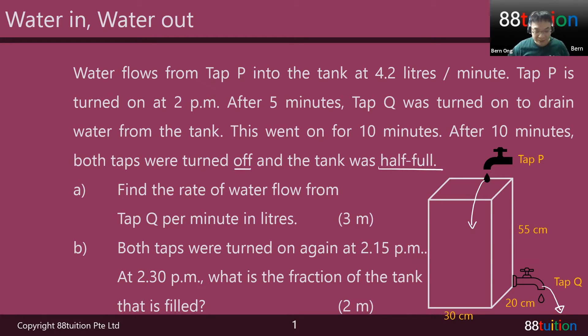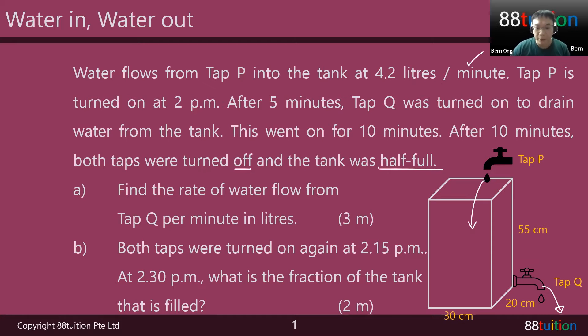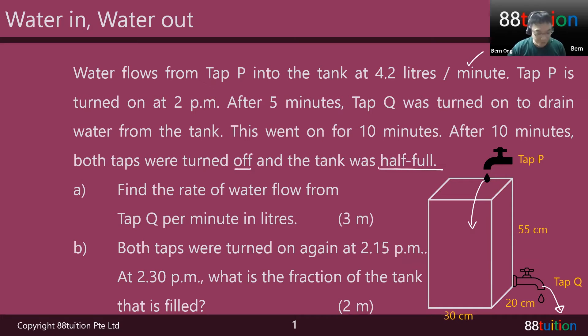Let's take a look at part A first. Find the rate of water flow from tap Q per minute in liters. We know that tap P is flowing in at 4.2 liters per minute, but we don't know about tap Q — that's what you are supposed to find. Three marks!